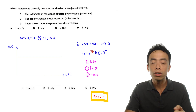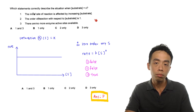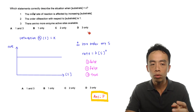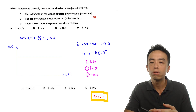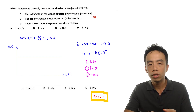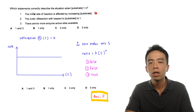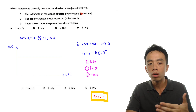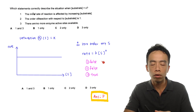Now that we understand this concept, looking back at the options, we can decide which statement is true and which is not. Statement one: initial rate of reaction is affected by increasing substrate. This is not true. We have already mentioned that when substrate concentration equals X, saturation occurs, so increasing substrate concentration will no longer change the initial rate of reaction. Statement one is false.